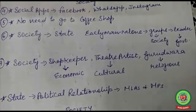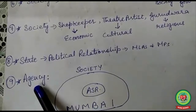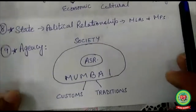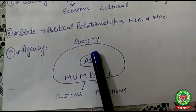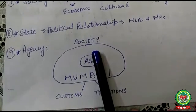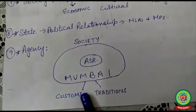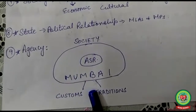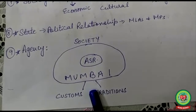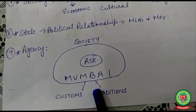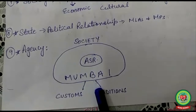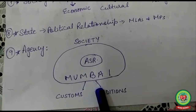The next point is: the state has an agency, which is the government, while society has no agency. The government is the agency of the state — all MLAs and MPs work on behalf of the government; if anything is done by India, the name is India's and the work is done by MLAs and MPs. Society, on the other hand, has no such single agency; society is maintained through a network of its own customs and traditions.